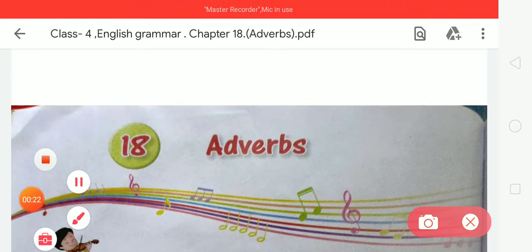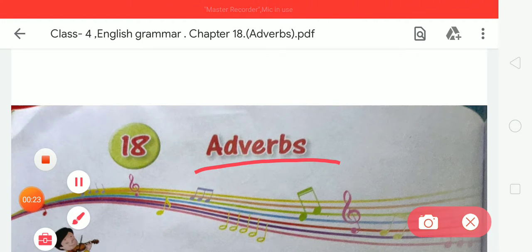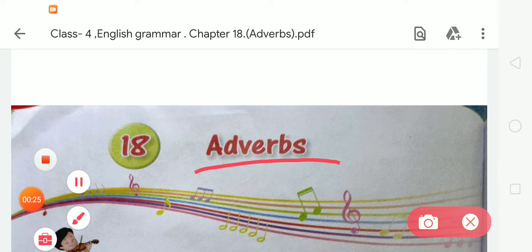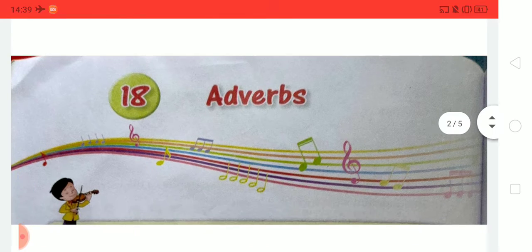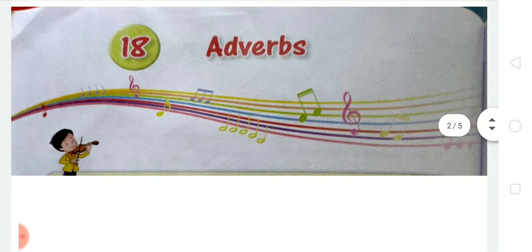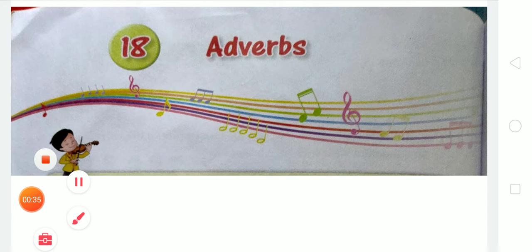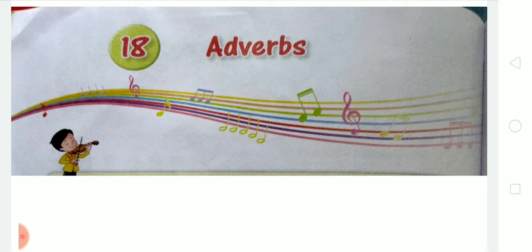Chapter 18 is named adverbs — it is the grammatical part on adverbs. In our last video we discussed about adverbs and their kinds. Adverbs of degree has three forms: the first is positive, the second is comparative, and the third is superlative.